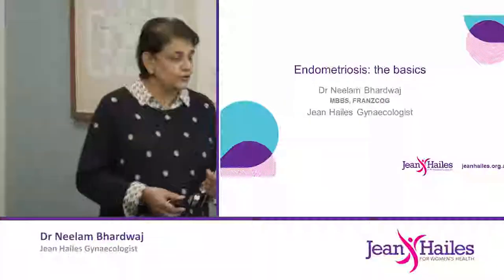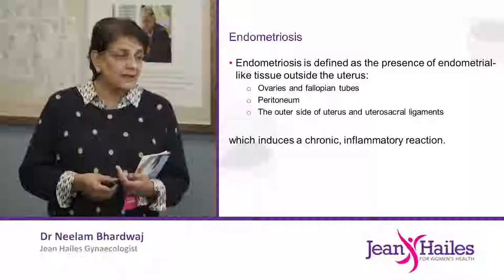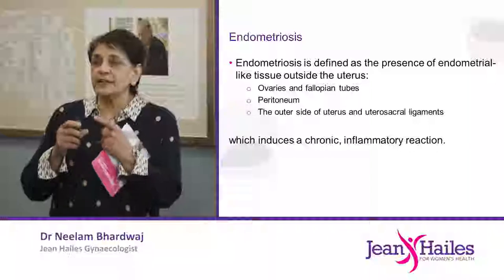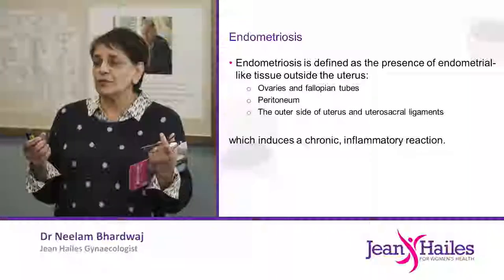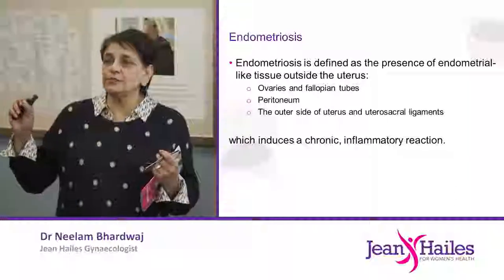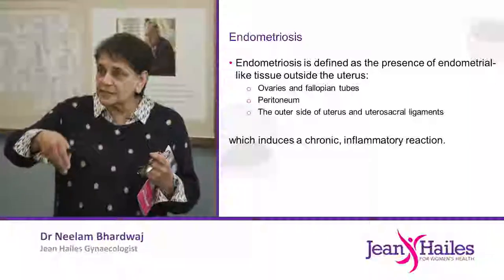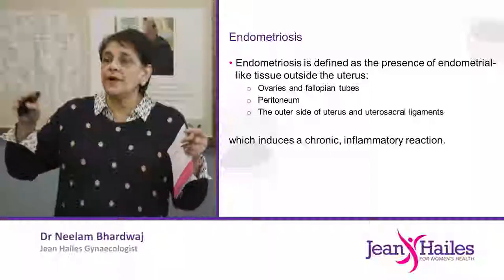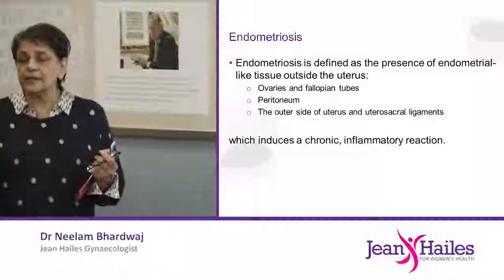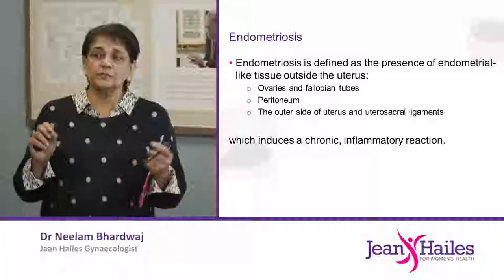I'm going to talk to you about endometriosis today. The definition is important. Endometrial tissue present in a space outside the uterus is really what defines endometriosis. When the endometrial tissue is present commonly behind the uterus, in the pouch of Douglas — the space between the rectum and the uterus — on the tubes, the ovaries, and the peritoneal cavity, these ectopic places where endometrial tissue is present is the term endometriosis.